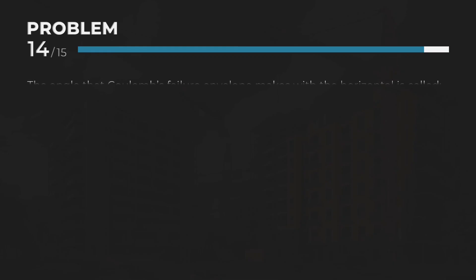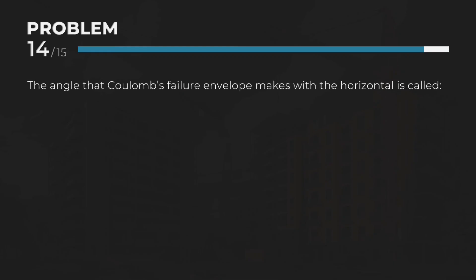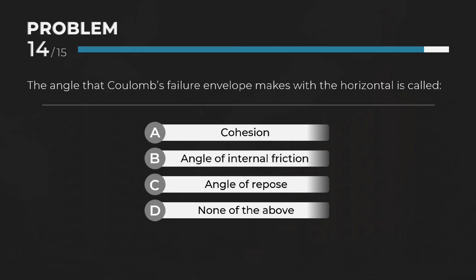The angle that Coulomb's failure envelope makes with the horizontal is called — Answer: B. Angle of internal friction.